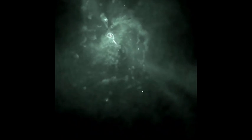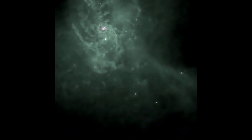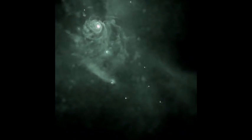It is also in these protogalaxies that the seeds of the first massive black holes form. We think that these seeds may range in mass from 100 to 100,000 times the mass of the Sun.